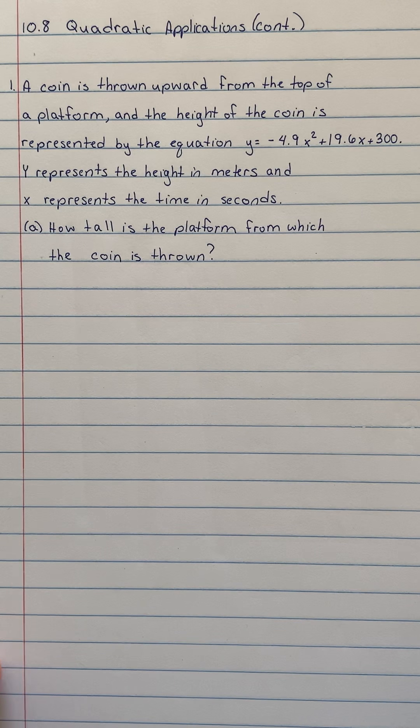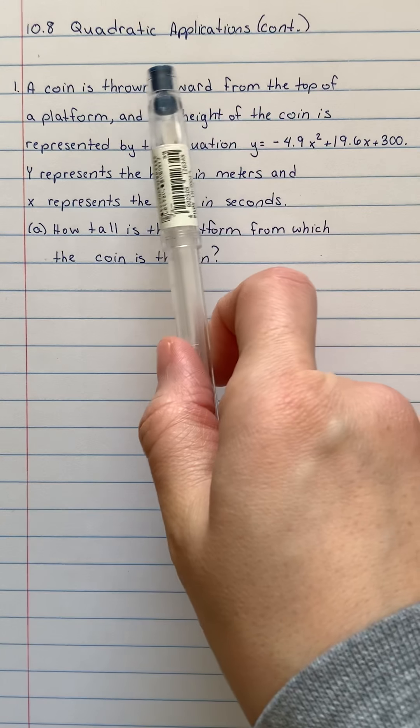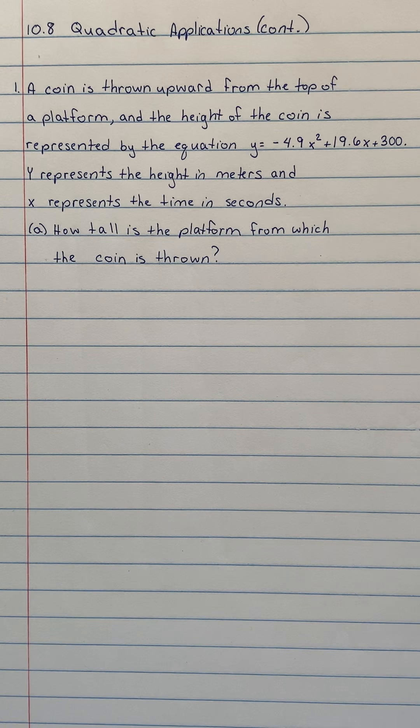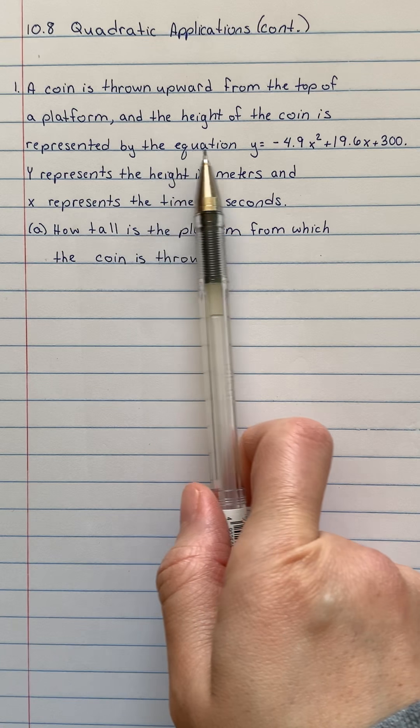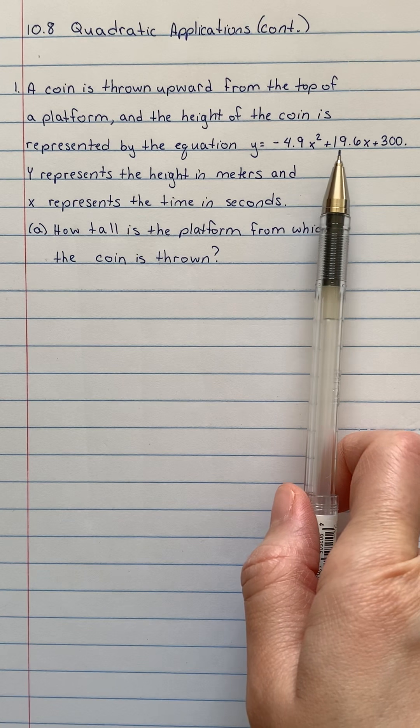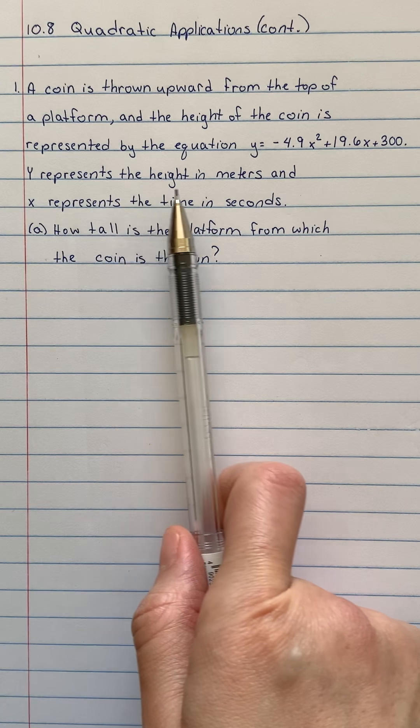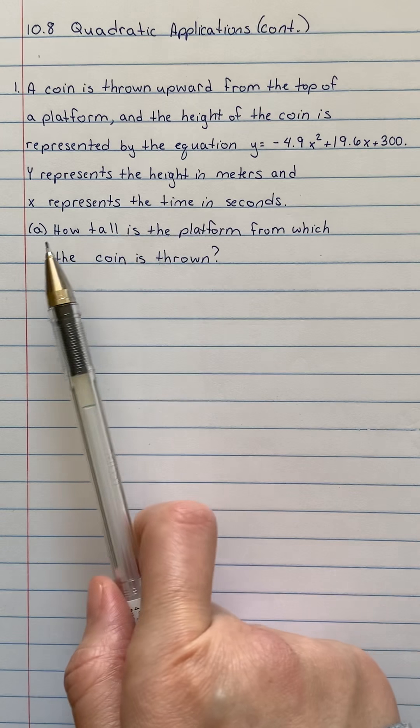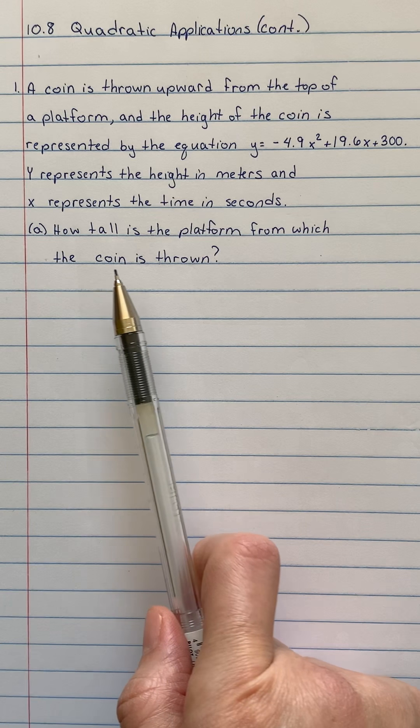So first of all, here's my first example. So this would be a good time to pause the video so you can write down what the example is. This is our 10.8 quadratic applications continued. And the question says, a coin is thrown upward from the top of a platform and the height of the coin is represented by the equation Y equals negative 4.9X squared plus 19.6X plus 300. Y represents the height in meters and X represents the time in seconds. Part A, how tall is the platform from which the coin is thrown?